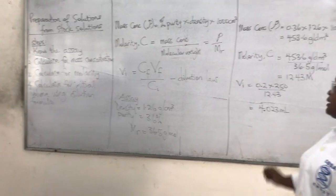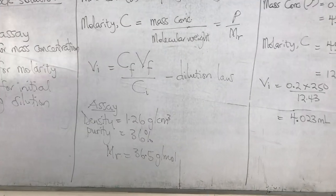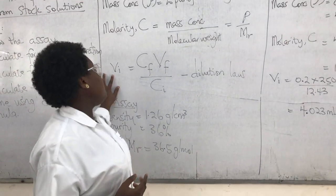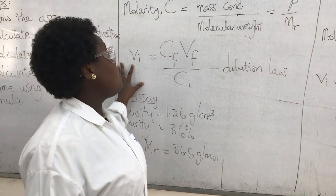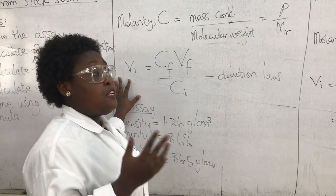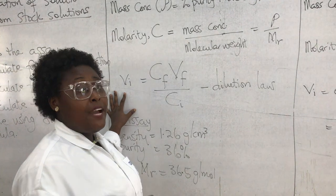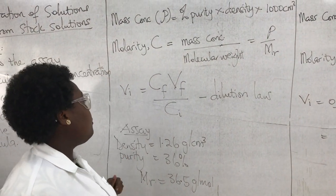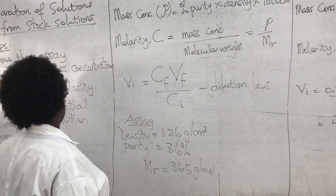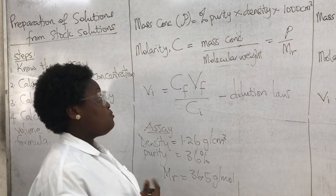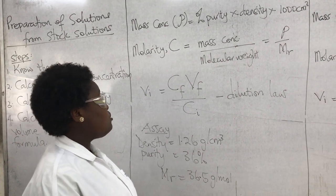The final step is to calculate the initial volume using the dilution formula. The formula is C₁V₁ = C₂V₂, or as I prefer to write it, CᵢVᵢ = CfVf, where 'i' means initial and 'f' means final. We need to determine the volume of stock solution required to dilute to our desired concentration.